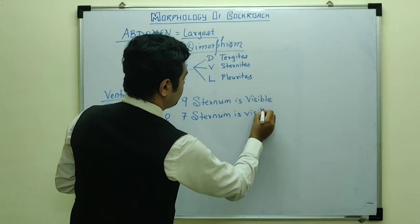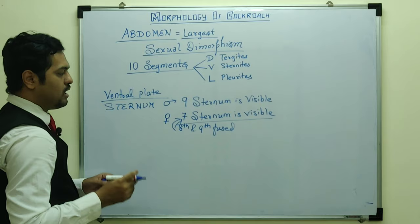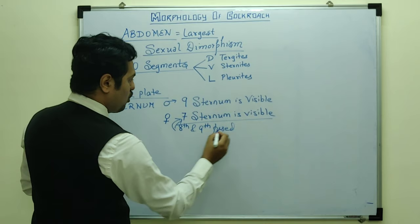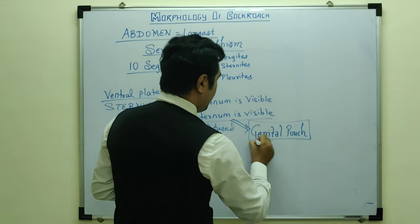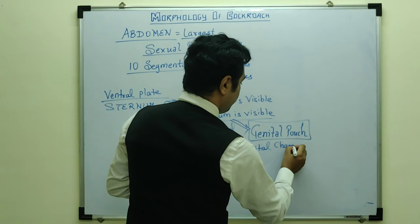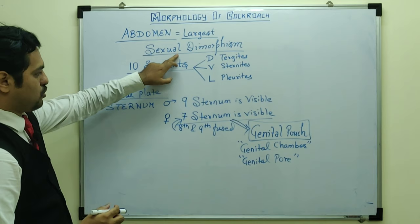In female cockroach, only 7 sternites are visible because the 8th and 9th have been fused with the 7th sternite. The 7th sternite in the female forms a pouch-like structure known as the genital pouch or brood pouch. Within this genital pouch there is a genital chamber and a genital pore.